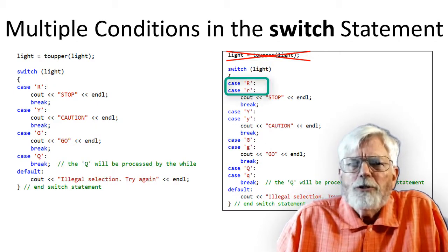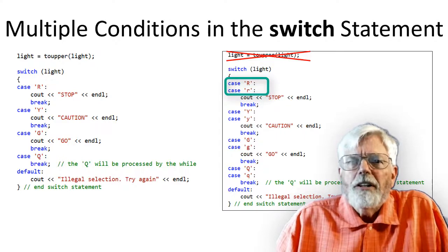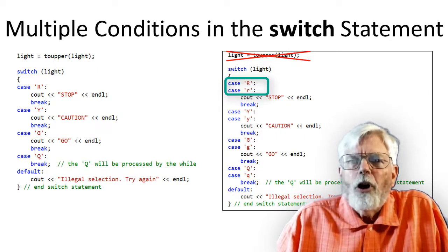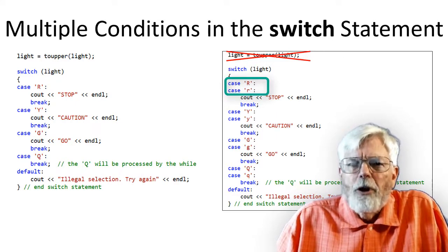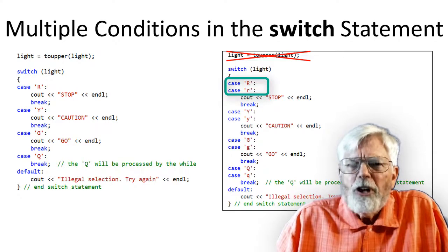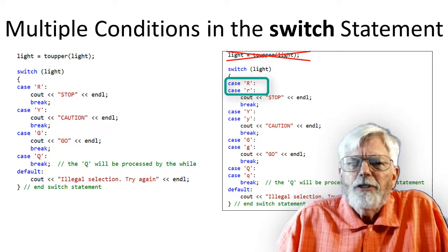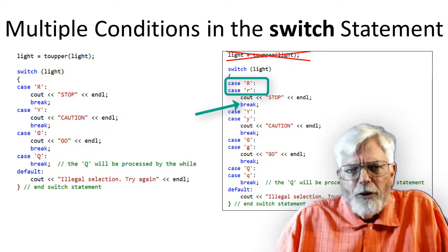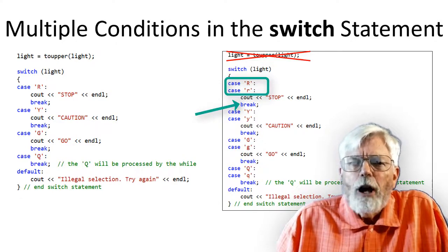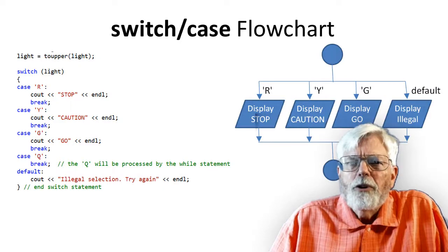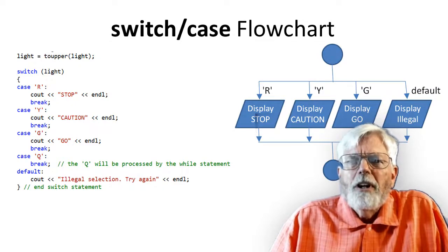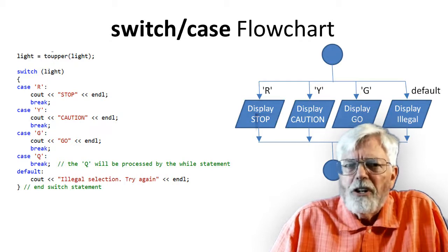Since the program would keep flowing down, you can use multiple case statements for each condition as shown in this example. Instead of converting the light variable to uppercase, just use a case capital R followed by a case small r. If either the capital R or the small r is matched with the light variable, flow keeps going down, outputting the word STOP, and finally exiting the switch statement when the break is reached. If you forget the break after the cout to display STOP, flow would keep going down and display caution after displaying STOP. When using a flow chart to diagram the case statement, the selections are usually graphed horizontally instead of vertically.